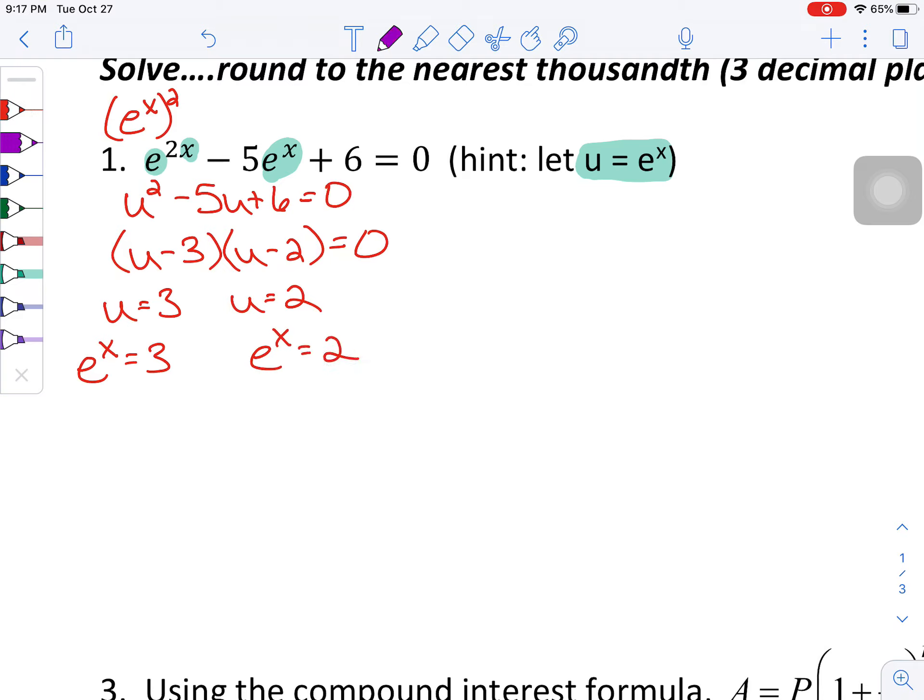Now, one of the things that we talked about at the very beginning of logarithms was being able to convert from these exponential problems to logarithmic notation. So our base e is going to require us to use the natural log, and it's going to be the natural log of 3 is equal to x, and the natural log of 2 is equal to x.